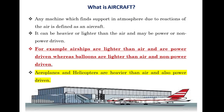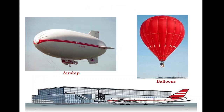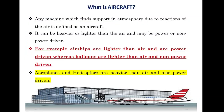Balloons are lighter than air and non-power driven. Airships are the power-driven type, while balloons are the non-power-driven type. Aeroplanes and helicopters are heavier than air and power-driven. So to distinguish: lighter than air and power-driven — airships; lighter than air and non-power-driven — balloons; heavier than air and power-driven — aeroplanes and helicopters.